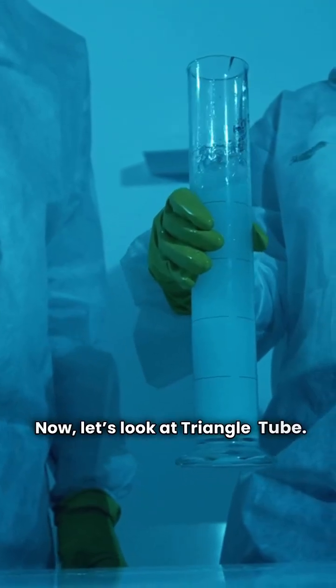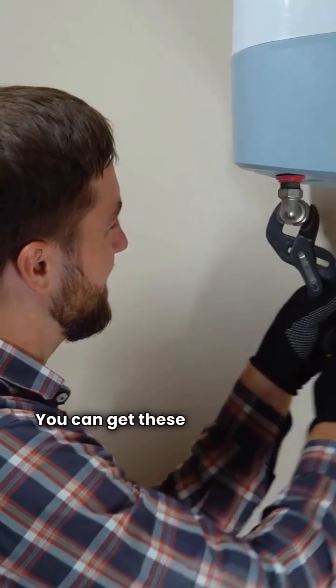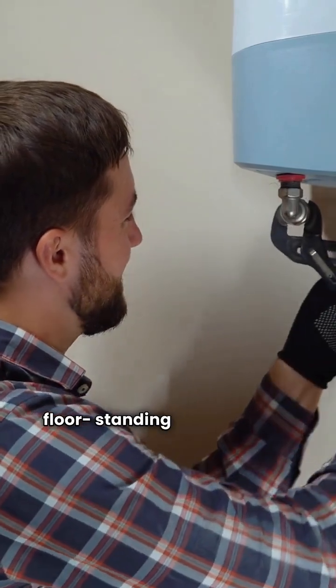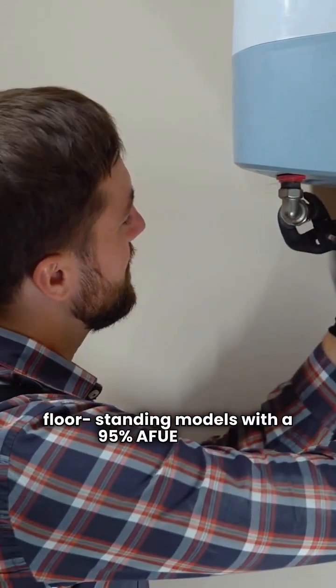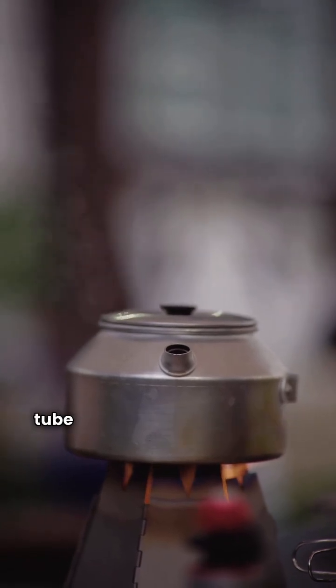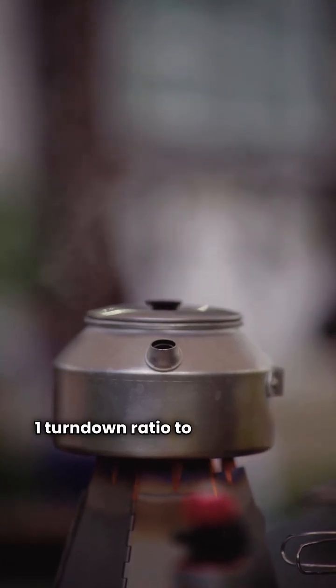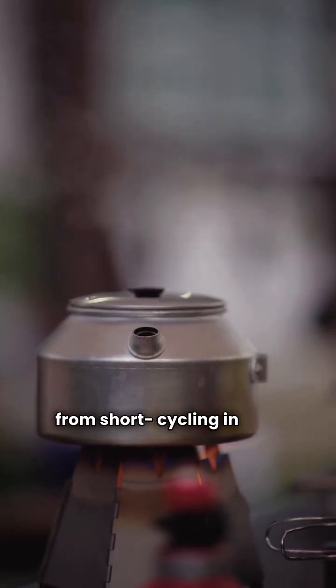Now, let's look at Triangle Tube. Their Instinct Series is all about keeping things simple. You can get these in wall-hung or floor-standing models with a 95% AFUE rating. They use a 439 stainless steel fire tube heat exchanger and boast an 8.1 turndown ratio to stop the unit from short cycling in mild weather.